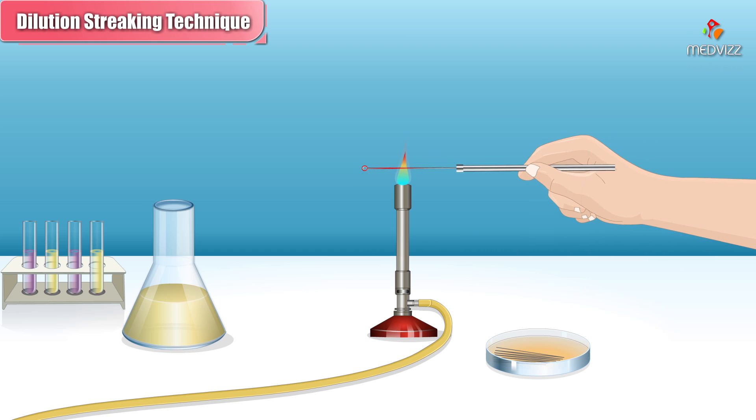The loop is sterilized and cooled again. This time the loop streaks over the first pass, collecting a small number of bacteria and spreading them into a fresh area of the dish.